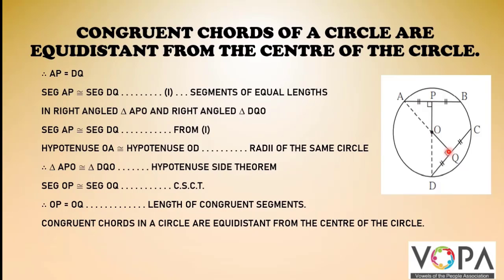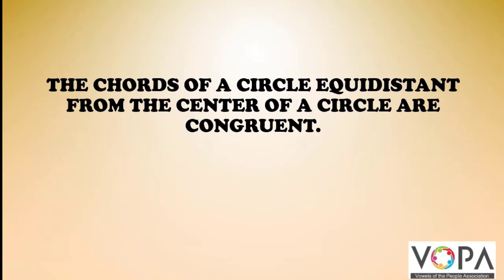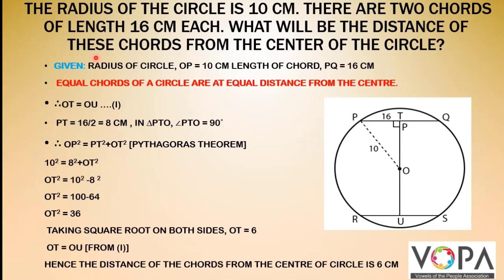Therefore OP equals OQ, as lengths of congruent segments. Hence congruent chords in a circle are equidistant from the center of the circle. Now let us learn the converse of the theorem: chords of a circle equidistant from the center of a circle are congruent.